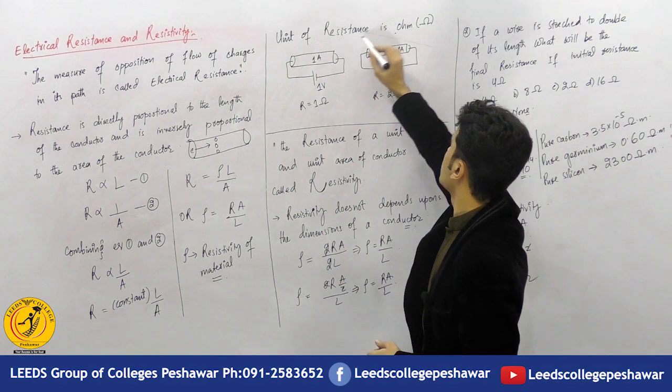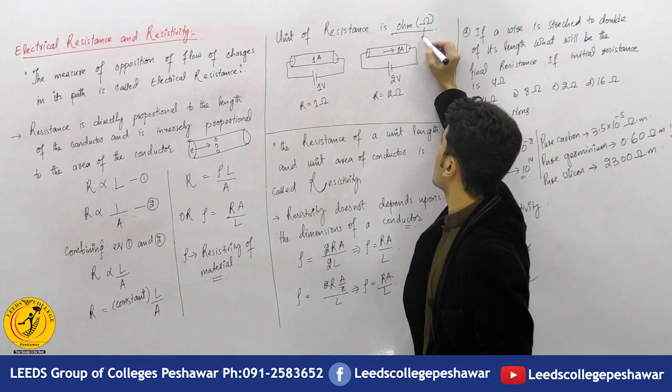Ohm is represented by this symbol — it is the Greek letter Omega (Ω). Omega is the unit symbol for electrical resistance.